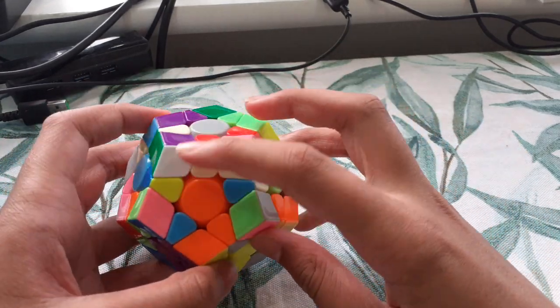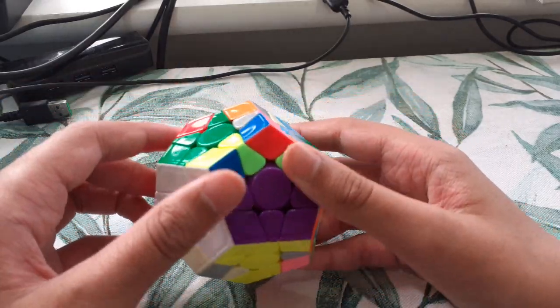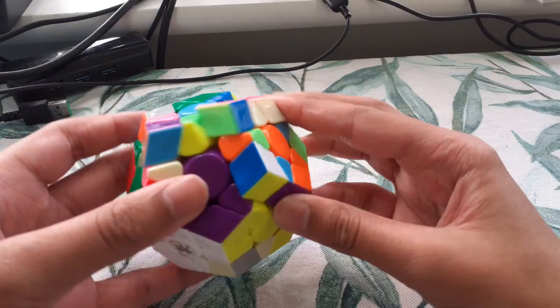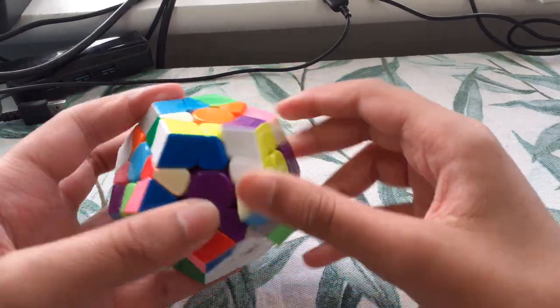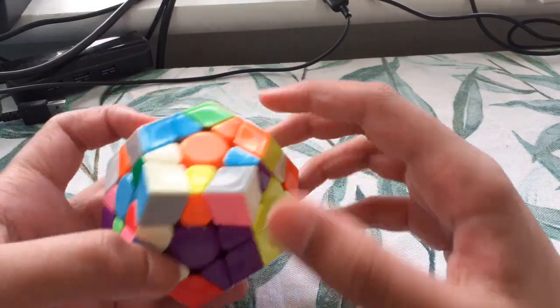Now I have this corner and this edge. I remember seeing the corner for this edge somewhere. I was here. Here it is, so I can pair these two, insert like that. Now I have this corner, I don't see...